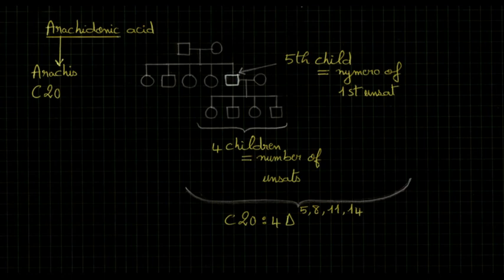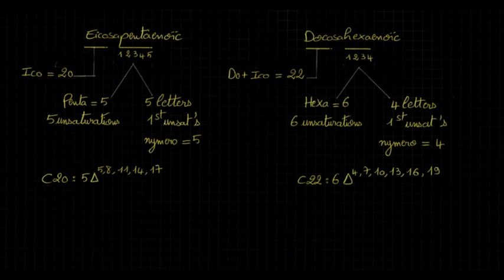The two last fatty acids are the easiest to remember. The first one, eicosapentaenoic, divided gives us Greek number eico meaning 20 carbons. Penta means 5 unsaturations, and since penta is composed of 5 letters, the first unsaturation's number is 5. For docosahexaenoic, same thing. Docosa originally do plus eico means 22. Hexa means 6 unsaturations, and hexa composed of 4 letters, so 4 letters match number 4.